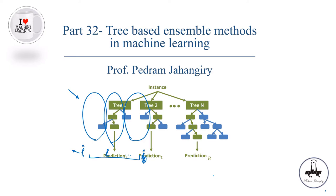If it is classification, it's also straightforward. We're going to look at the majority votes. For example, tree number one might say 'default,' tree number two says 'default,' tree number three says 'no default.' At the end of the day, we look at the majority vote, and that's going to be the prediction of the model.